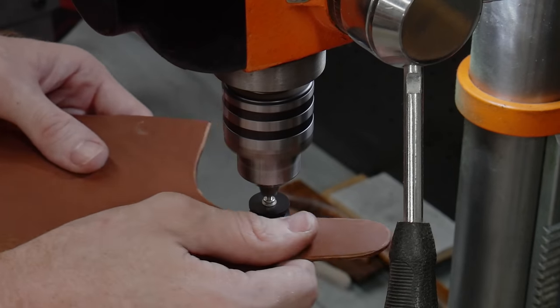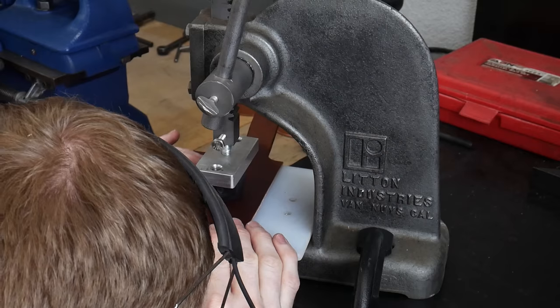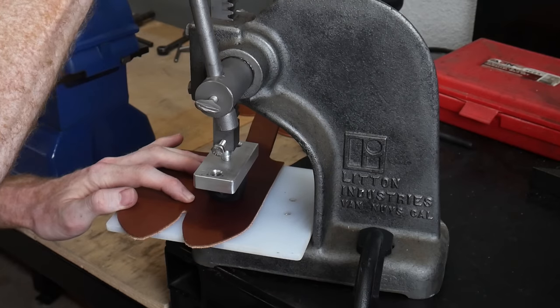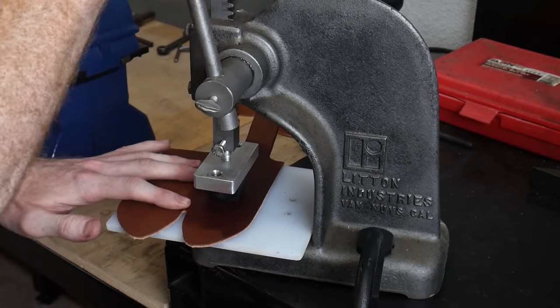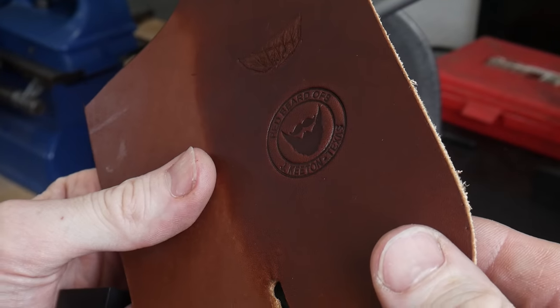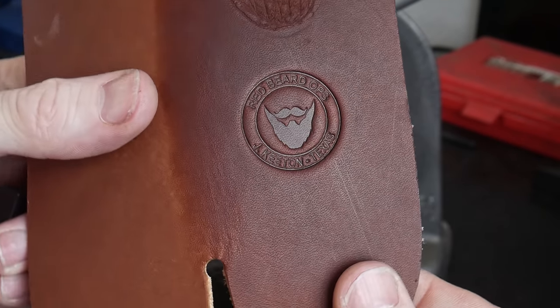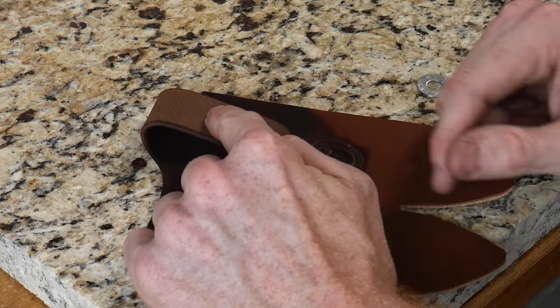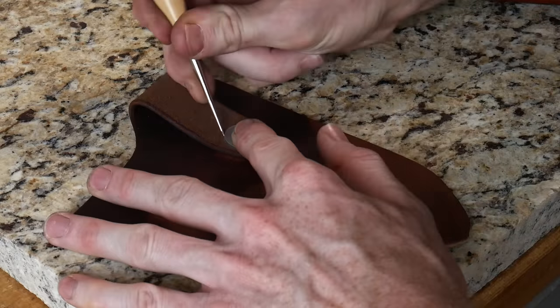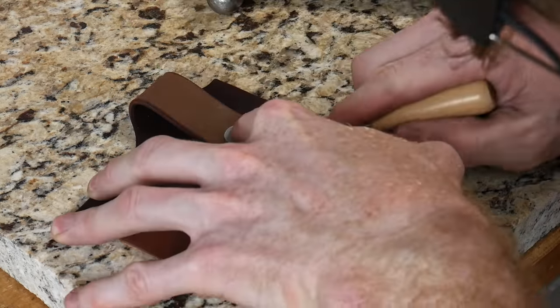I then case the leather to make it soft using a water and Pro Carve solution. With the leather softened up, I pressed in my maker's mark with an arbor press and a 3D printed stamp from Ghost Graphics. I really like how this stamp has been performing and would highly recommend them for anyone making custom leather products.